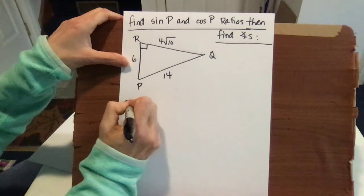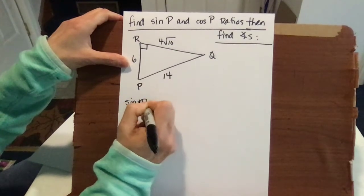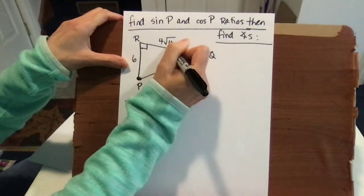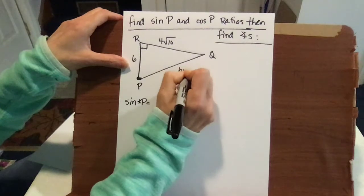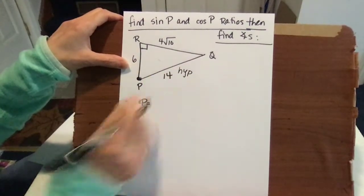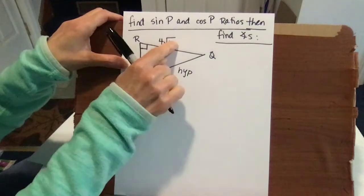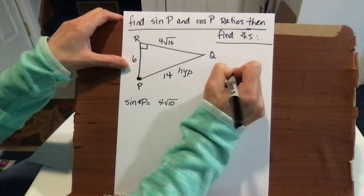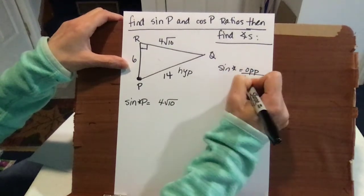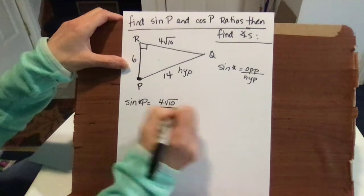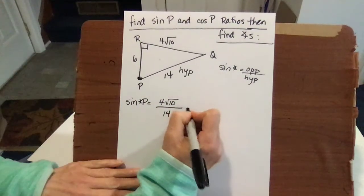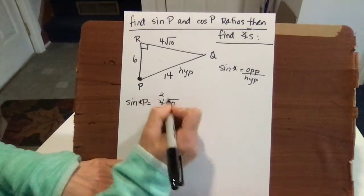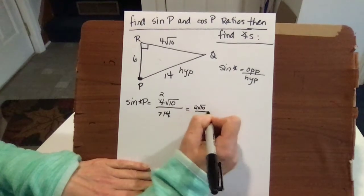Sine of angle P equals, from angle P's perspective, the opposite side over the hypotenuse. The hypotenuse is always opposite your 90-degree angle, so it's always going to be 14. With respect to P, the opposite side is 4 root 10. So sine of P equals 4 root 10 over 14. Our hypotenuse is 14, and reducing this ratio — 4 and 14 divide by 2 — we get 2 root 10 over 7. That's the ratio.